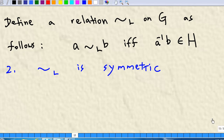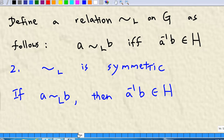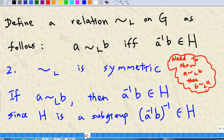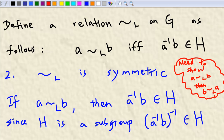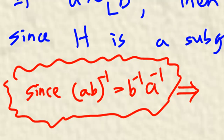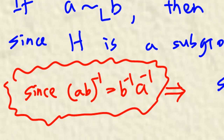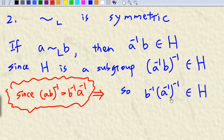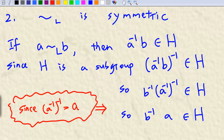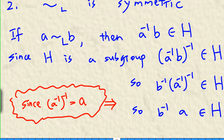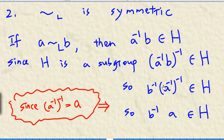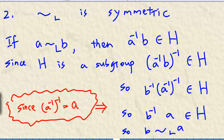Next, we'll show that this relation is symmetric. If A is related to B, then A inverse B belongs to H. We need to show that B is related to A. Since H is a subgroup, the inverse of A inverse B belongs to H. The inverse of A inverse B equals B inverse times A. Therefore, B inverse A belongs to H, which means B is related to A. This shows the relation is symmetric.